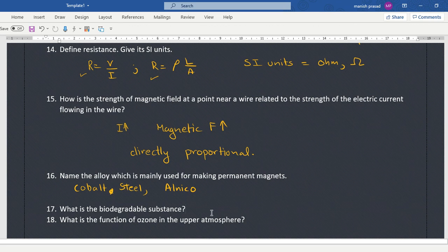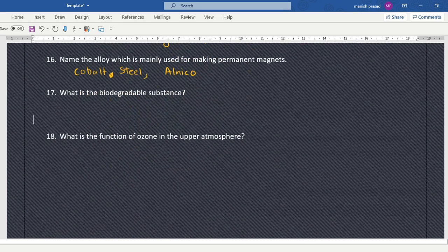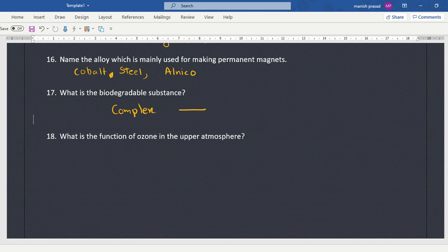So, these are... What is a biodegradable substance? A biodegradable substance is a substance which can be decomposed by natural decomposers. Exactly. A complex substance that can be broken down by natural decomposers by all the biological methods.